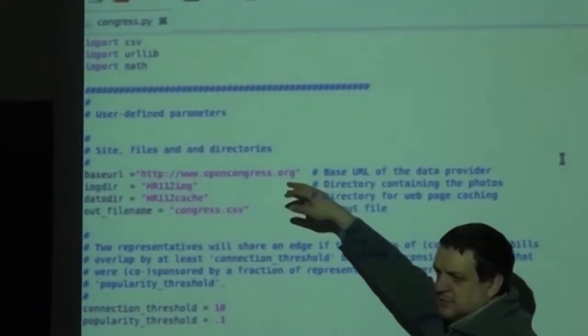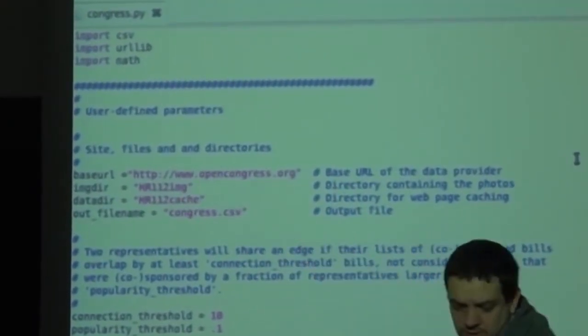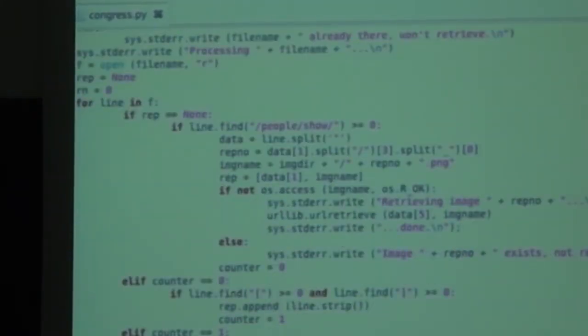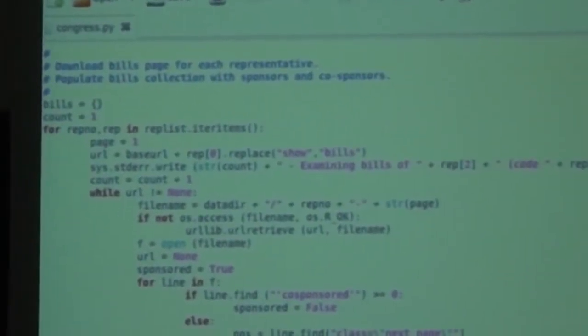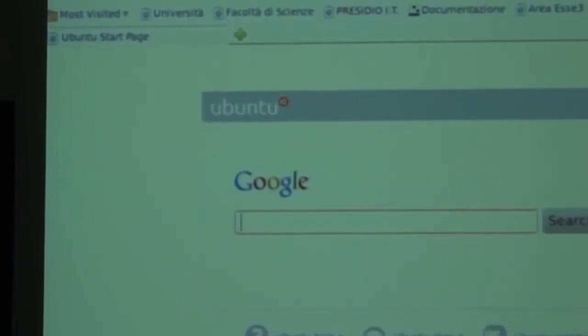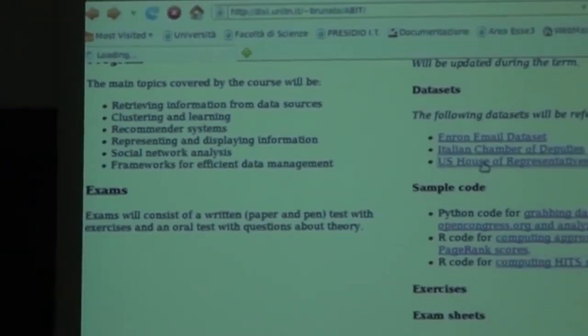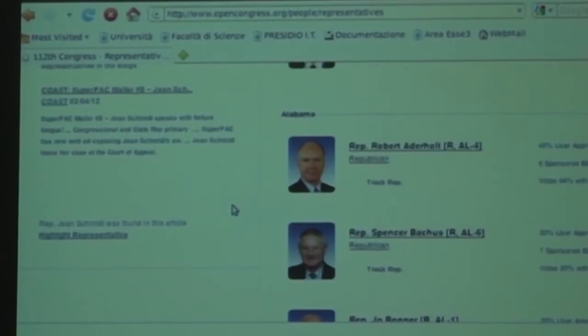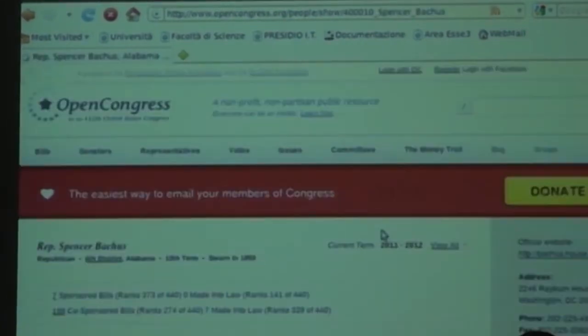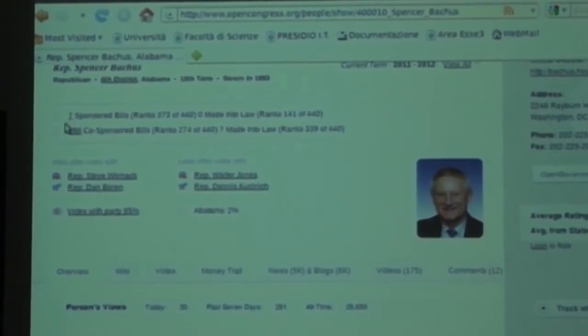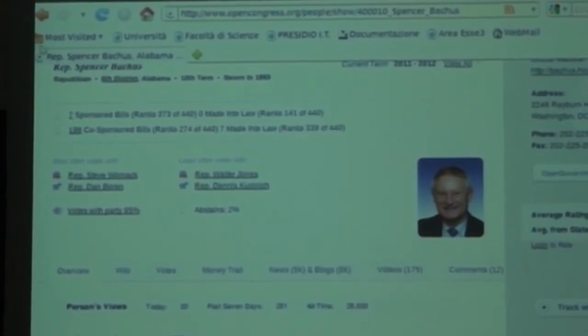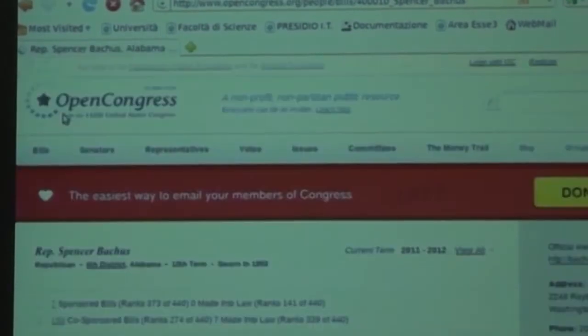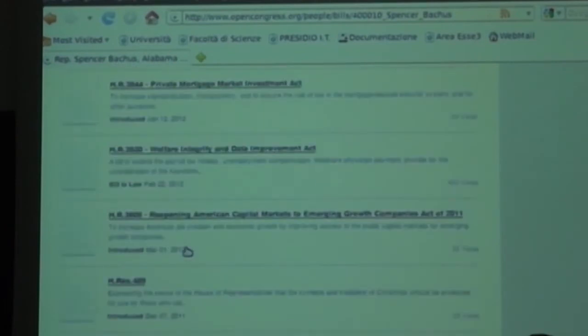This code will, as I told you last time, need the Open Congress website and I added everything that is needed to download not only the homepage but also download the page, download the representative pages that are listed in the homepage, and then have a look at the list of sponsored and co-sponsored bills.